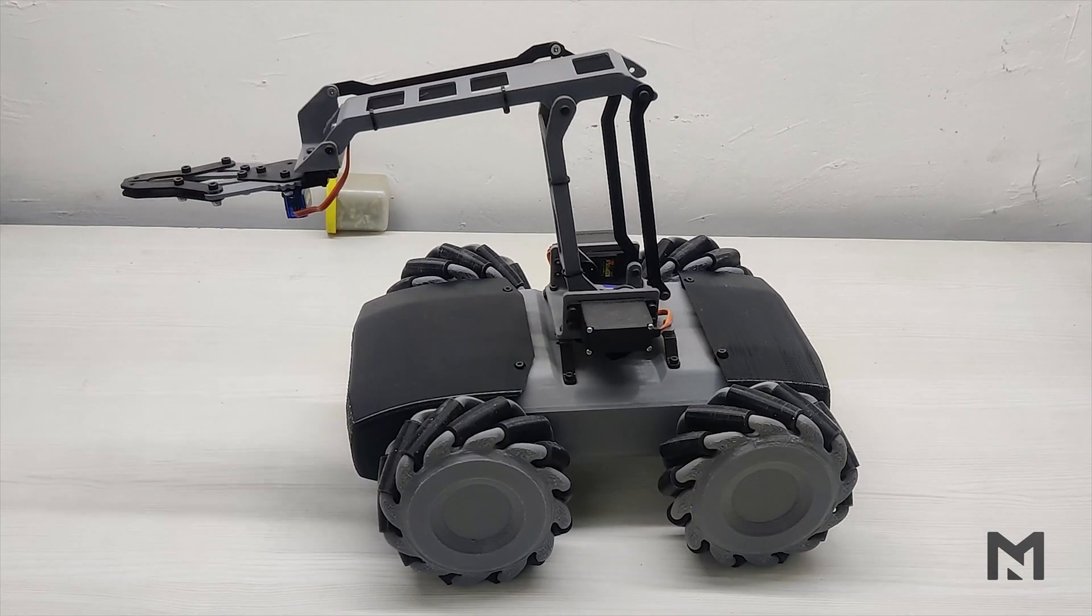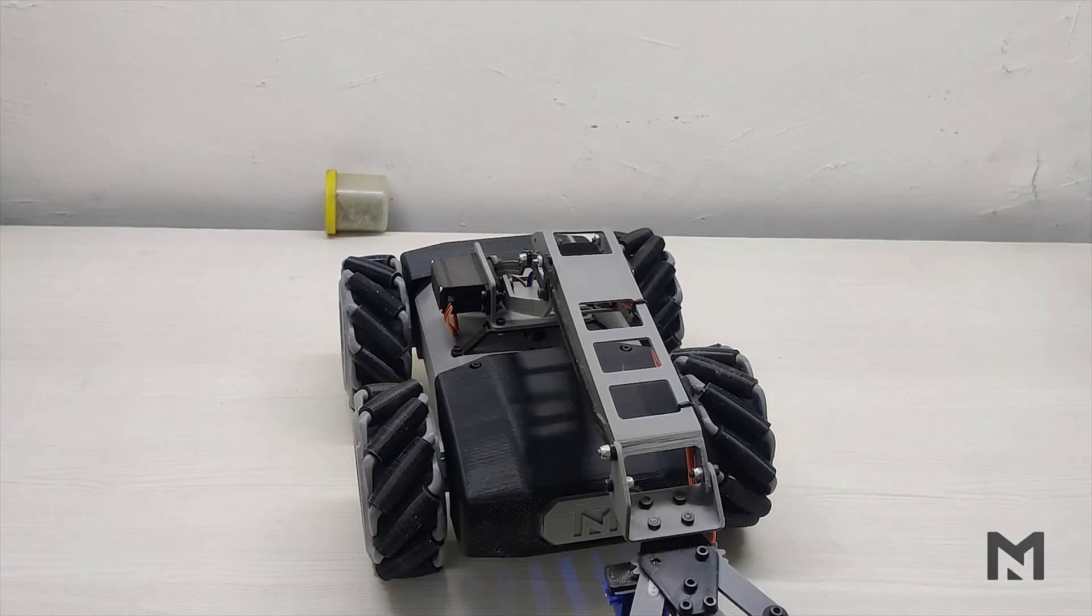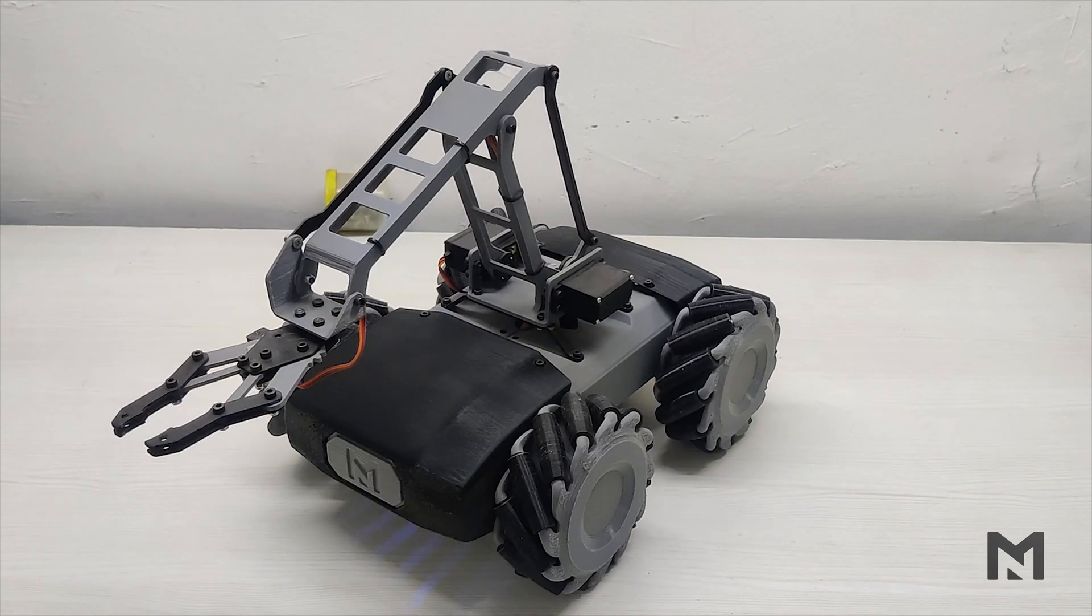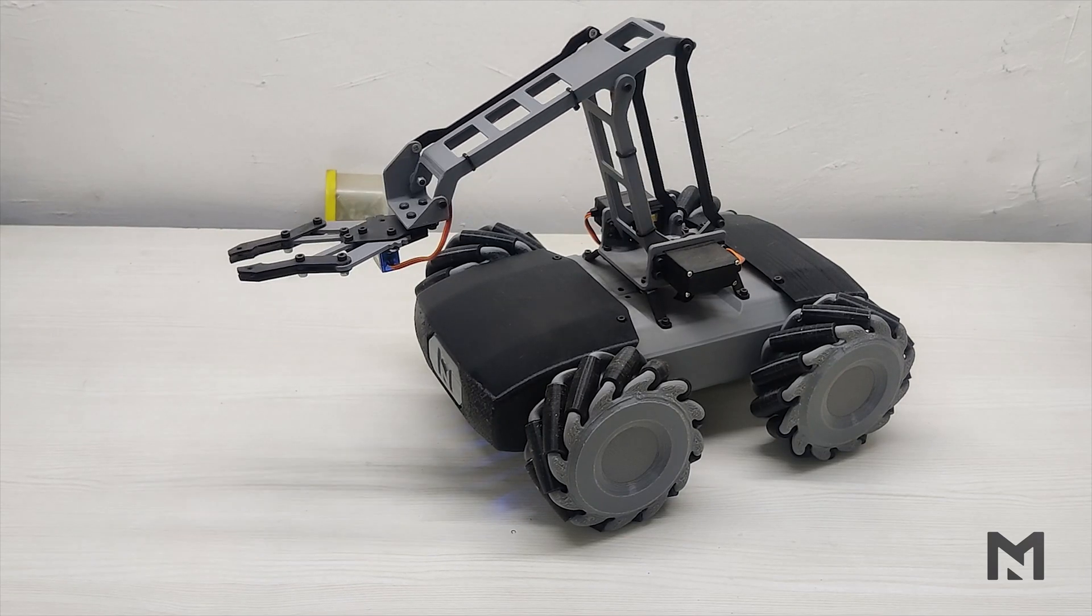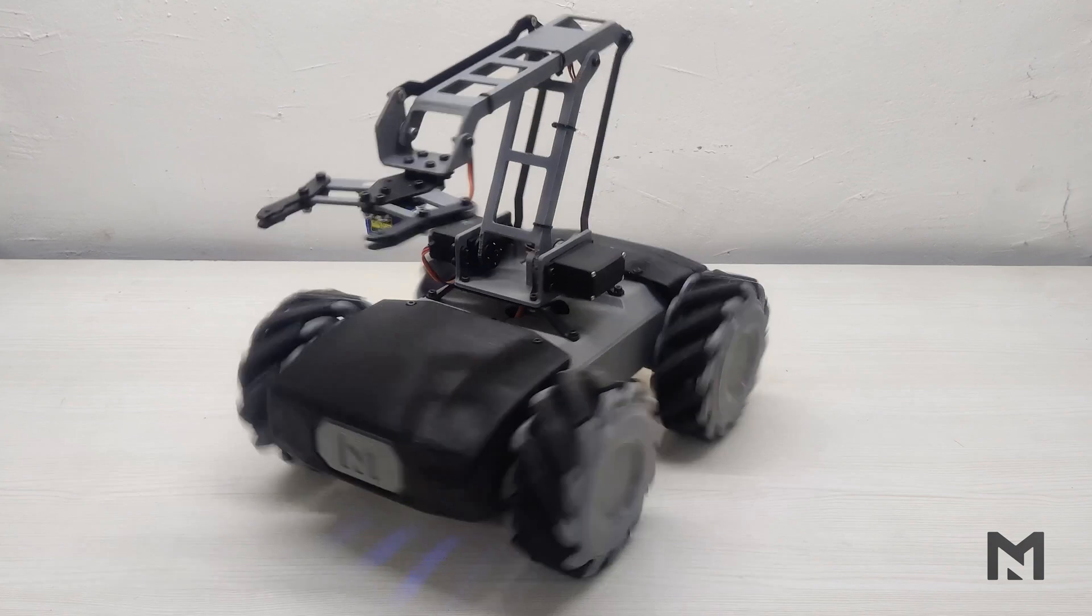As everything was working perfectly, I tested the lifting capacity of the arm by picking up some weight from it. I found out its lifting capacity is somewhere about 500g. Though it can lift above 500g, above that range the arm used to vibrate during the robot motion. So 500g is the safe limit for the robot.